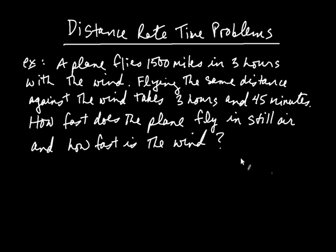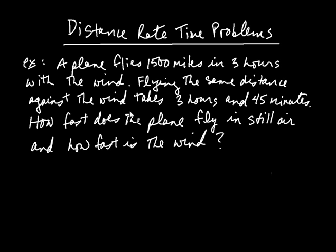In this video, we're going to talk about what are called distance-rate-time problems. I've written one here. A plane flies 1,500 miles in three hours with the wind. Flying the same distance against the wind takes three hours and 45 minutes. The question we're asked is: how fast does the plane fly in still air, and how fast is the wind?